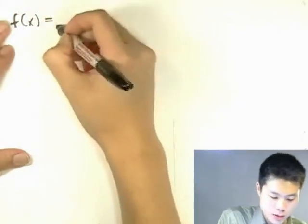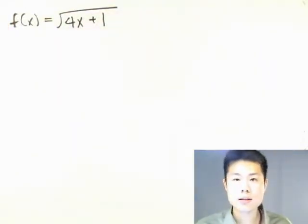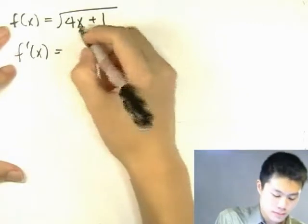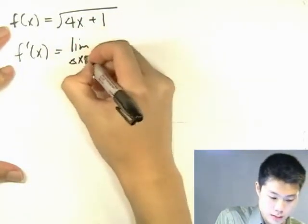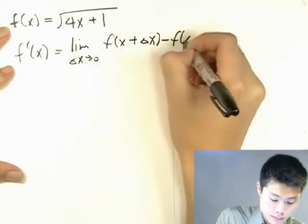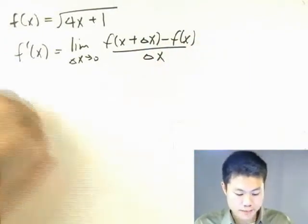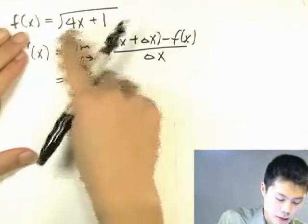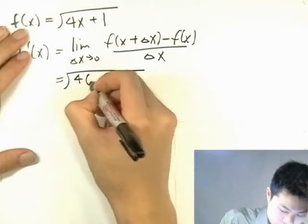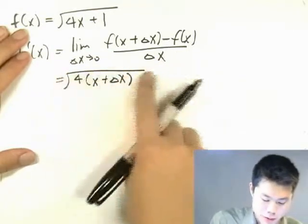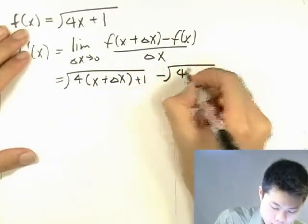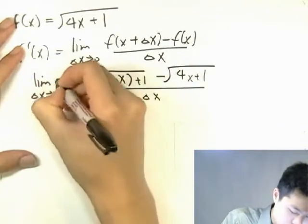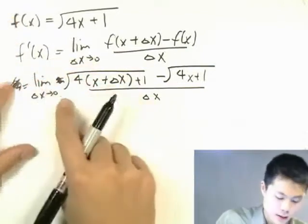Anyway, let's start. So f equals the square root of 4x plus 1. So how do we find the derivative? The first step is to rewrite the derivative formula and then just plug it in. So we're going to actually write in the formula instead of writing f. Don't forget to write this limit part because it is important.